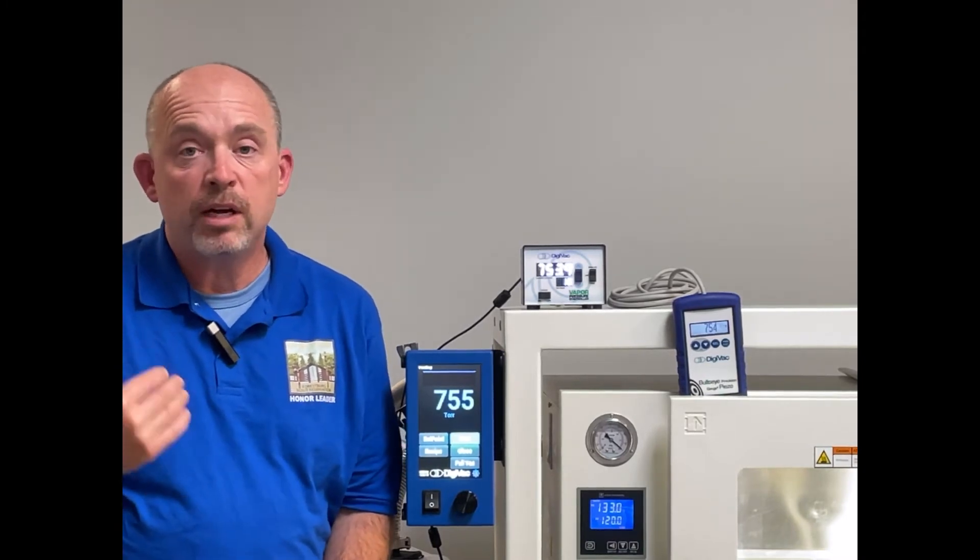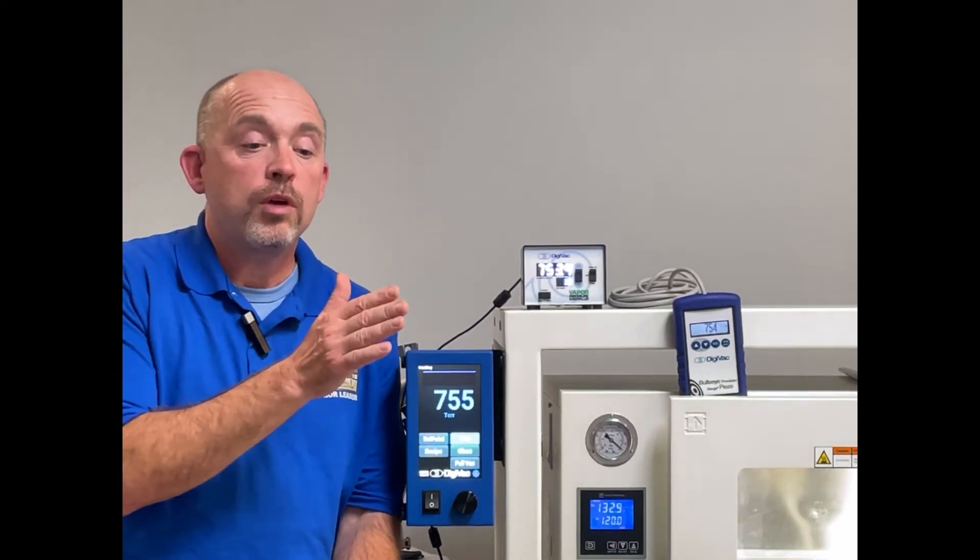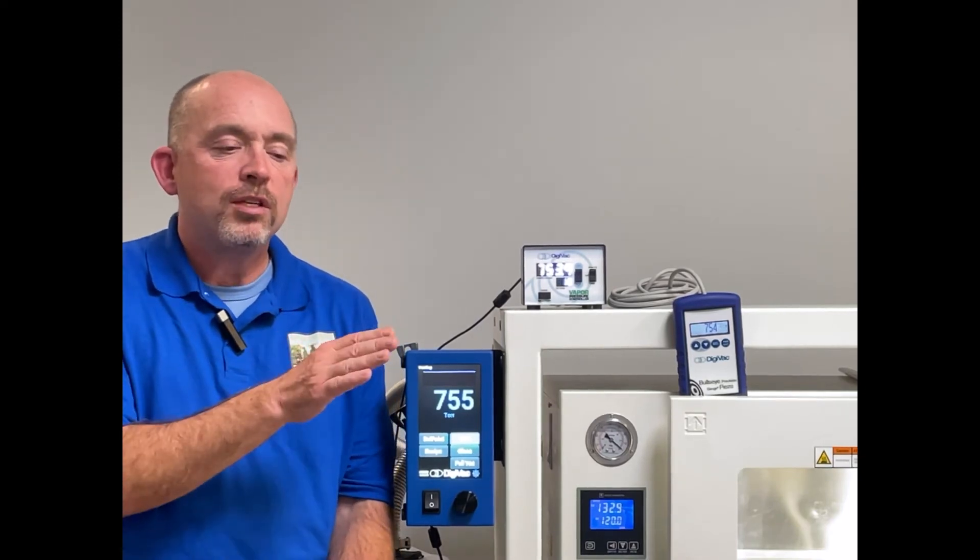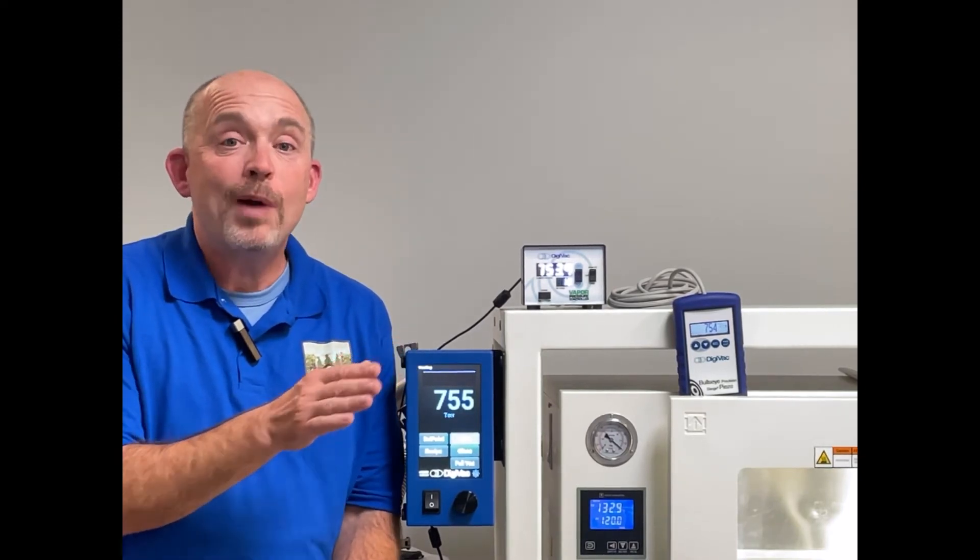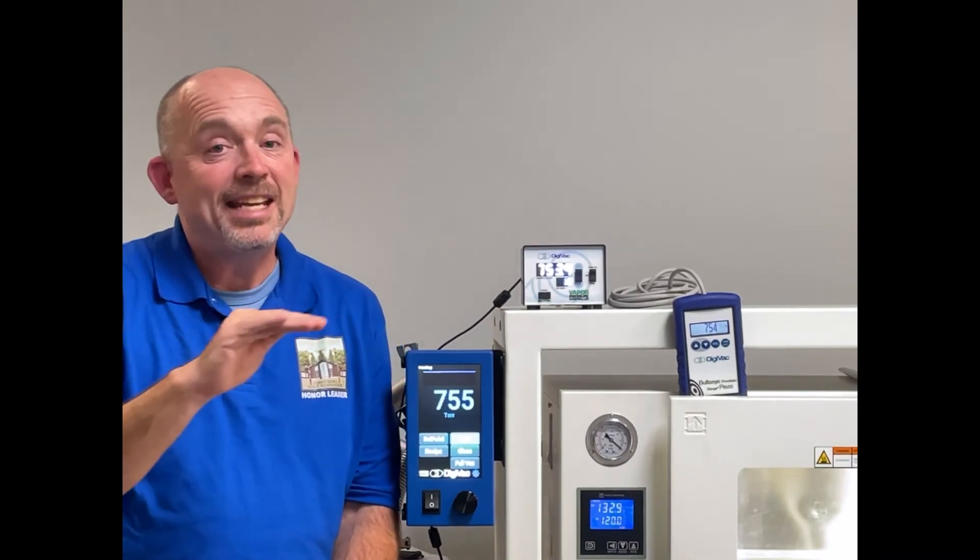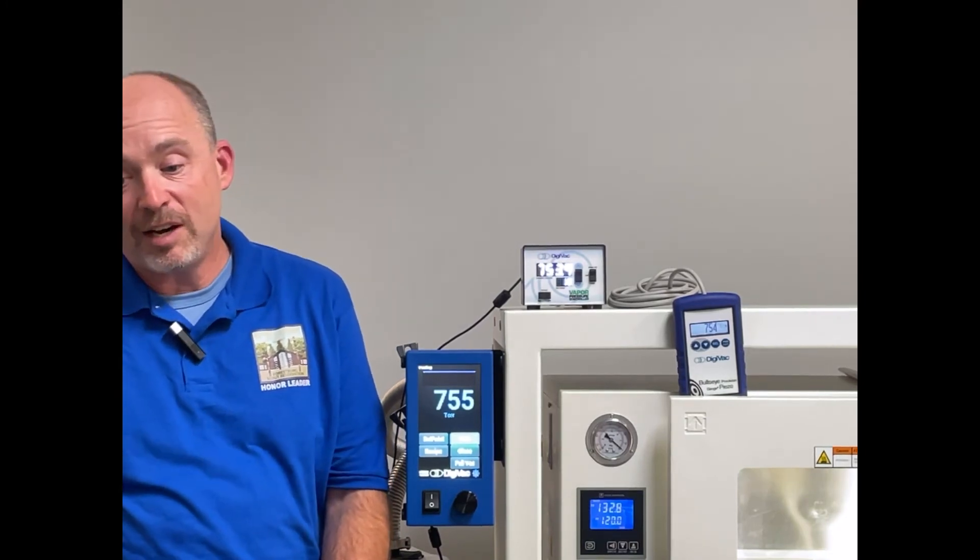you create a ramp rate, maybe over 20 minutes. If your target pressure is say half a torr, what you can do is over two hours ramp from atmosphere, about 760 torr, down to 2 torr, and then you can open up to full vacuum.